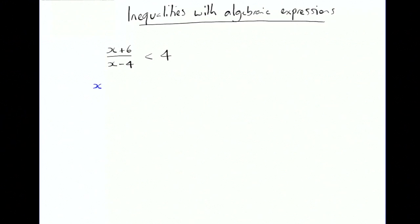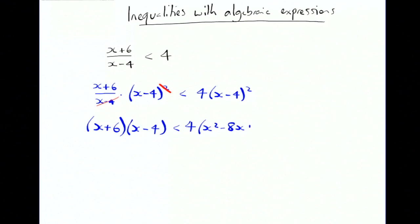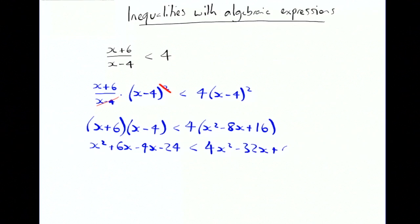We'll have a look at x plus 6 over x minus 4 is less than 4. The way we're going to guarantee it's a positive number is by multiplying by the denominator squared, remembering that squared numbers are always positive for real numbers. One of the x minus 4's cancels, and we end up with x plus 6 times x minus 4 is less than 4 times x minus 4 squared. Expanding: x squared plus 6x minus 4x minus 24 is less than 4x squared minus 32x plus 64.